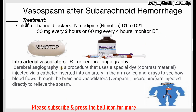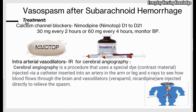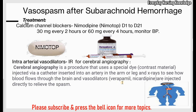Another treatment is intra-arterial vasodilators. The patient is taken to interventional radiology for cerebral angiography, a procedure in which a catheter is inserted into the artery through the groin or arm. A contrast material is injected into the arteries and x-rays are taken to detect blood flow to the brain. In intra-arterial vasodilators, medications such as verapamil or nicardipine are injected directly into the arteries to relieve or treat the spasm.